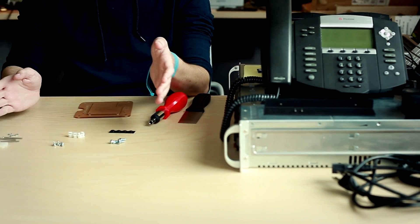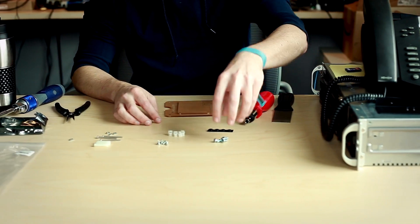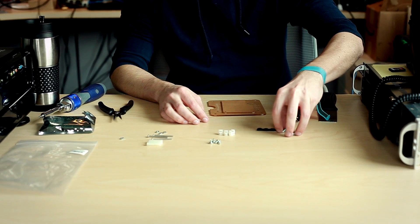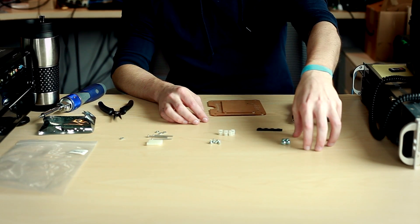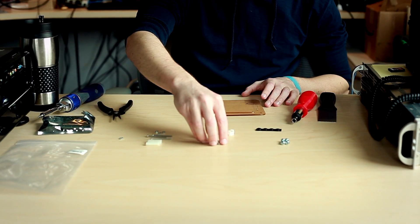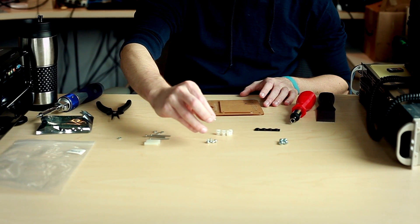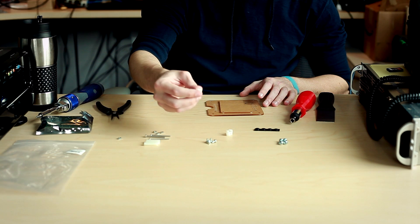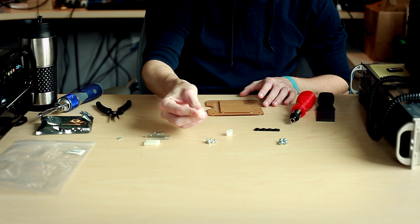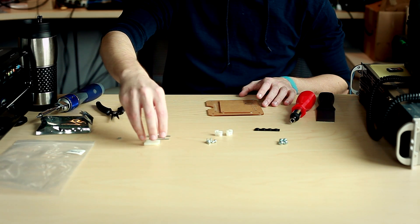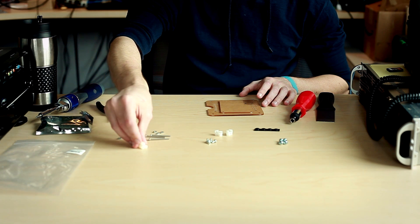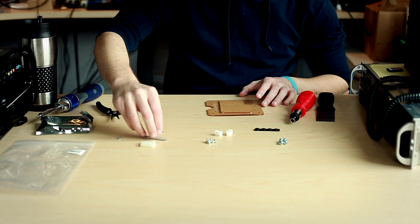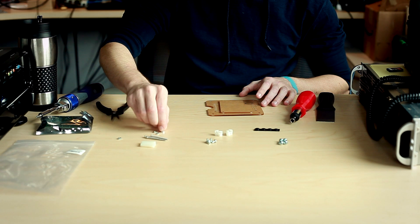Alright, so right out of the bag, there's a few things that you should have. Four of the VESA mount screws - those are going to be the very last thing that you use here. Four of these screws that have the wider threads, wide spacing between the threads, that's going to go in conjunction with these four plastic connectors. These three plastic pipes, three screws, and then three nuts for those screws as well.